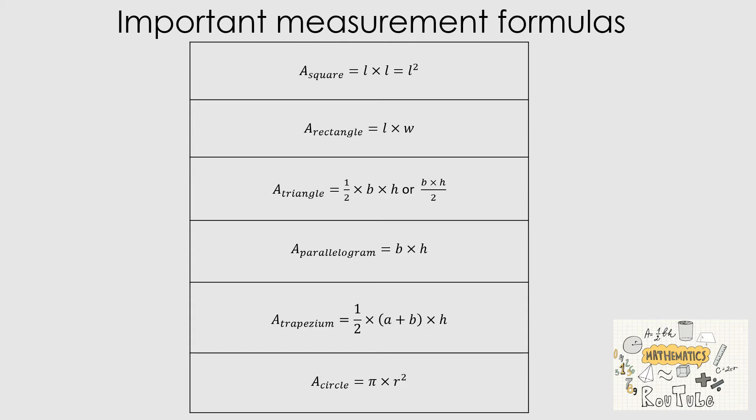Before we get to the concepts and content, it's important to list out these measurement formulas, which students will often be provided with or have a chance to create their own in an assessment setting. The area of a square is calculated as length times length, or length squared. It's important to understand that in a square there's no length and width — there's just length.